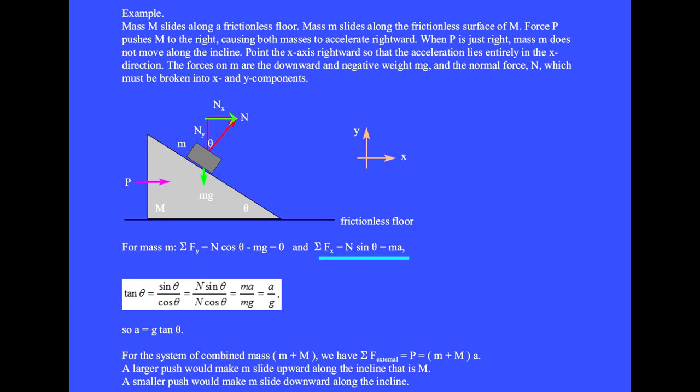The horizontal component of the normal force is accelerating mass little m to the right. Once again, we form tan theta equals sine theta over cosine theta, which we write as N sine theta over N cosine theta. But N sine theta is ma and N cosine theta is mg. We cancel m and have tan theta equals a over g. So a equals g tan theta.